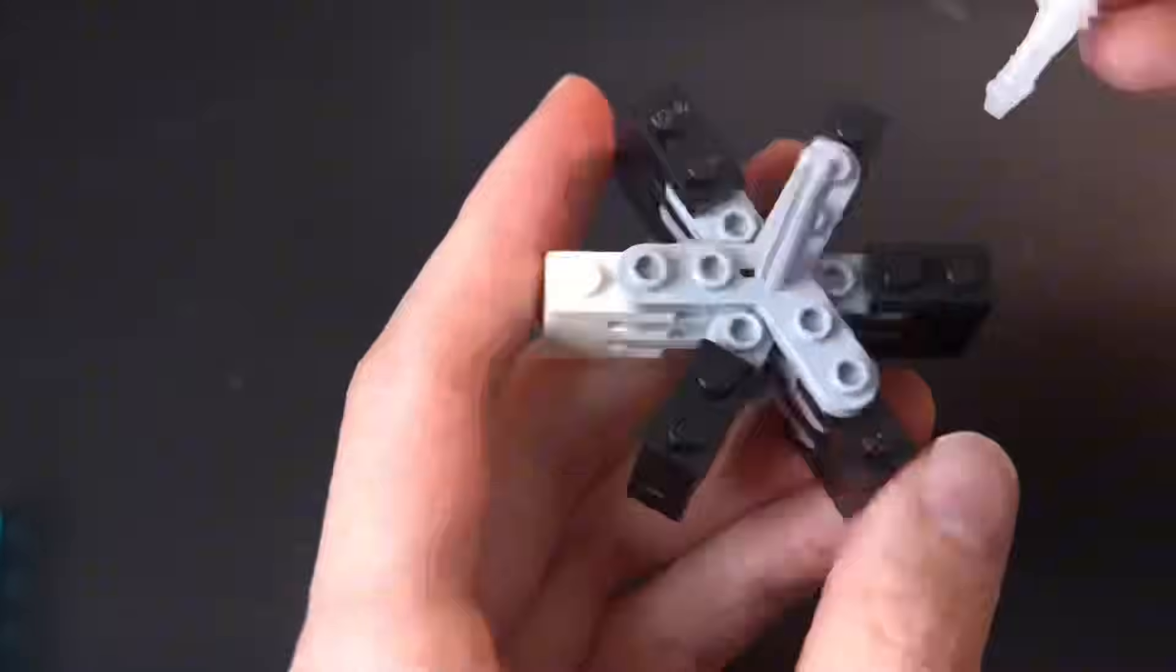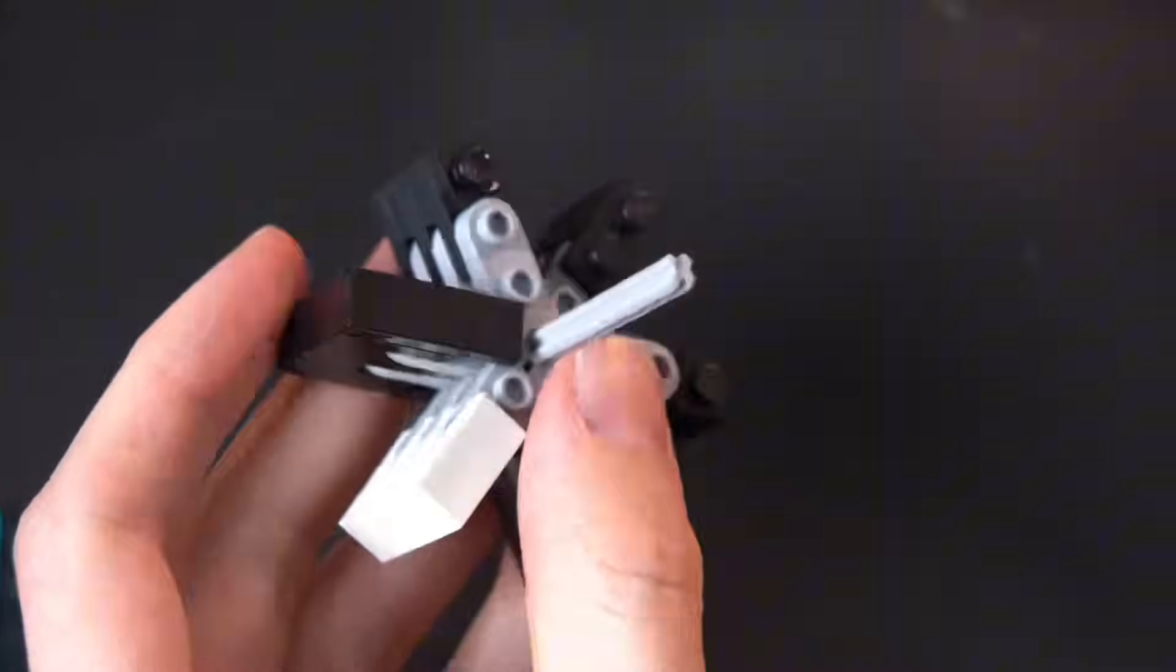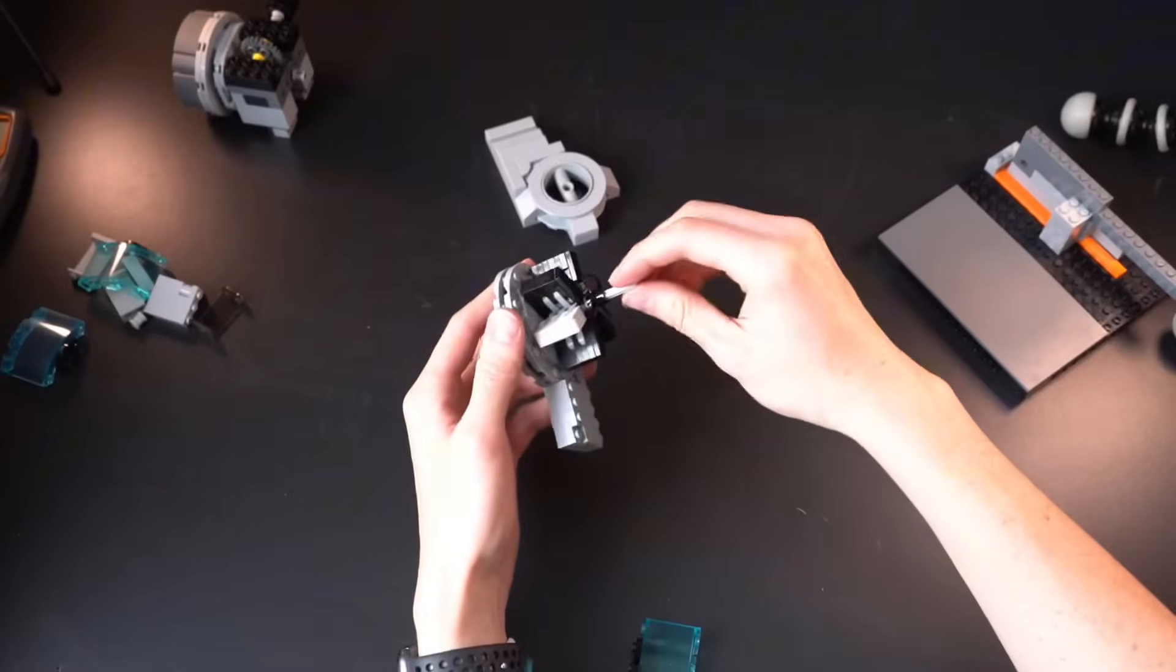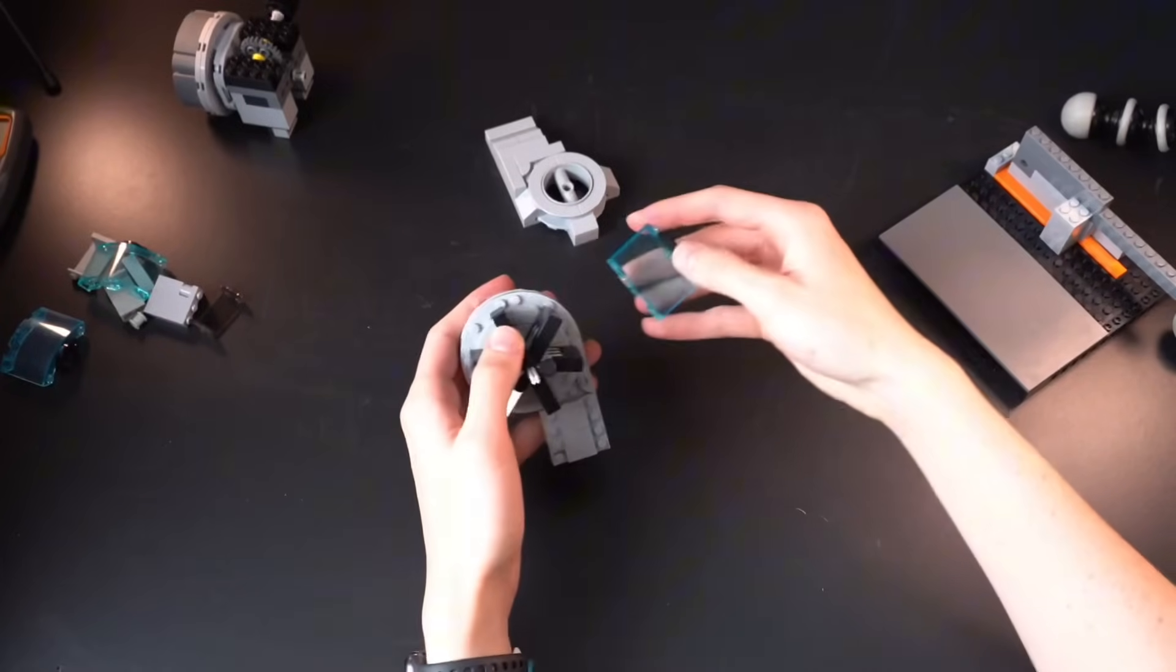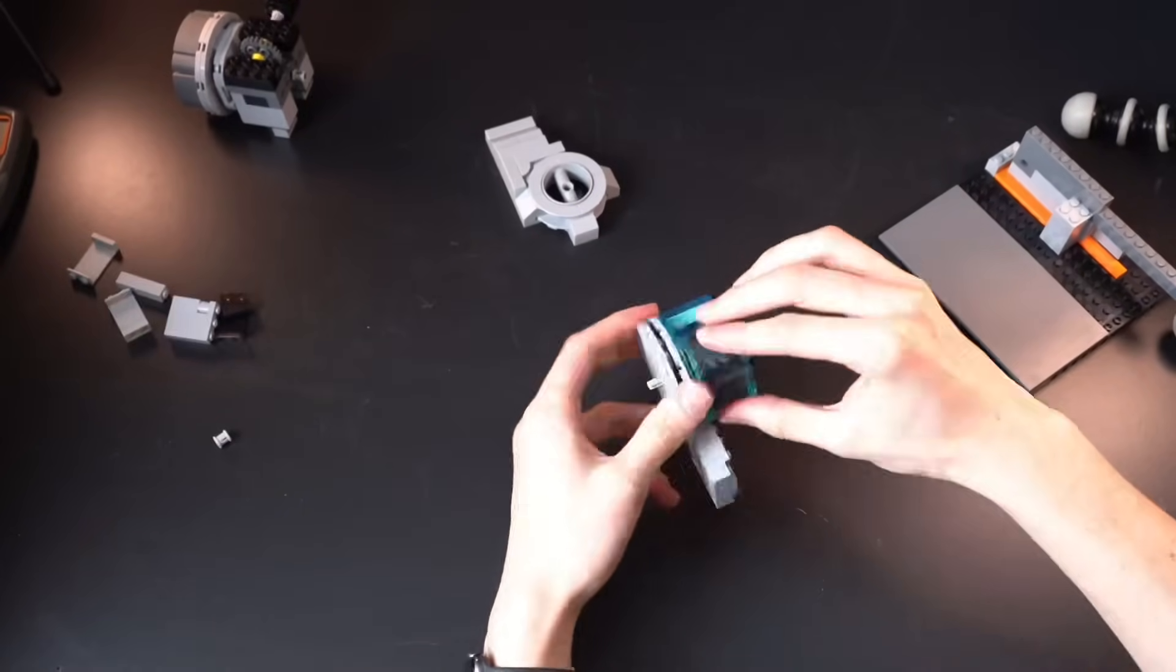You can see by the end of this I kind of gave up using the toothpick and just went with the glue. Careful if you're doing it this way though, can make a mess. The rotor was the only part I glued, so once I got that together I started putting the rest back.